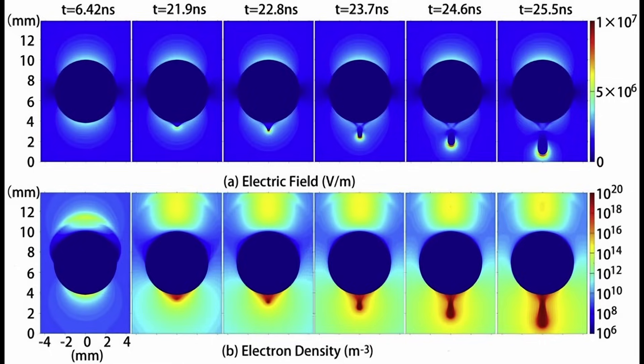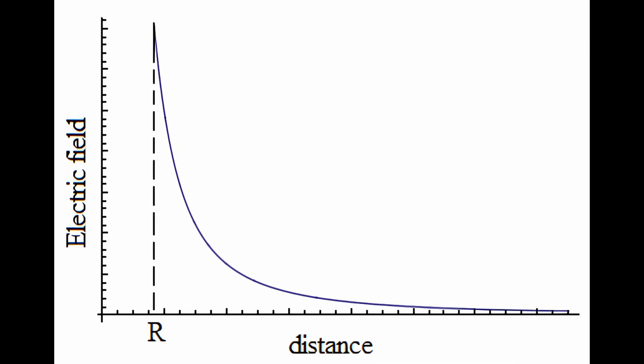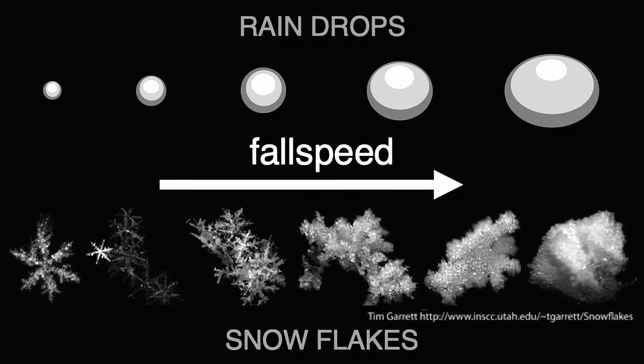The electric fields near the surface of hydrometeors owing to their charges could potentially exceed the local breakdown field. However, surpassing the breakdown field near the hydrometeor's surface does not guarantee electrical breakdown, as the electric field diminishes rapidly with distance. This diminishment is even more rapid for fields near the points of ice shards.